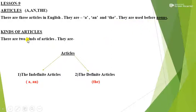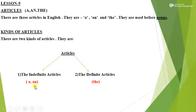Now we will see the kinds of articles. There are two kinds of articles. Number 1: the indefinite articles A and An. Number 2: the definite article The.